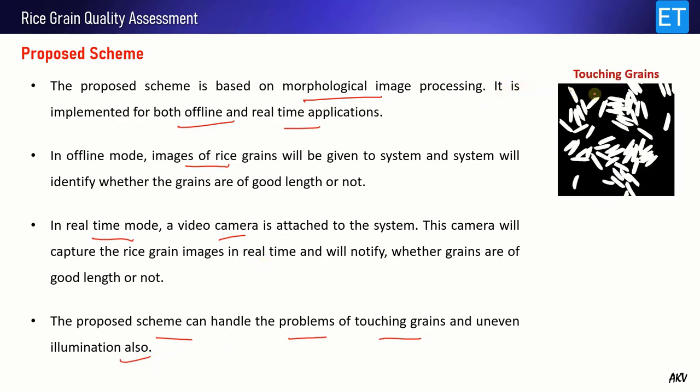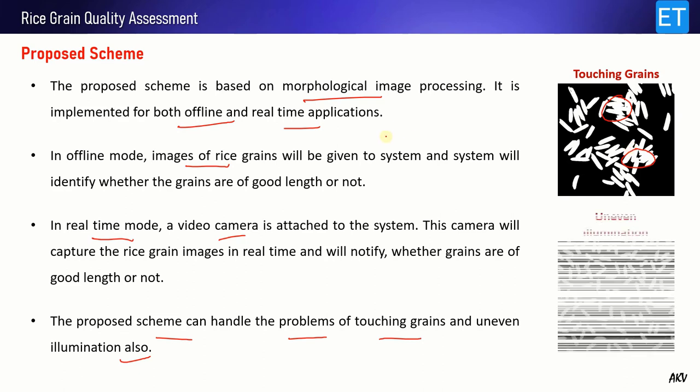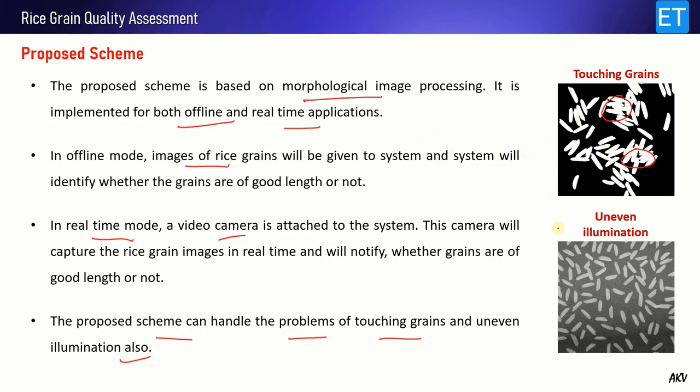Consider this image where we have touching grains. When you put rice grains in the sample, there may be cases where several grains are touching each other. During the binarization process this will create a large white blob, which creates a problem for the algorithm to give the proper outcome. This problem is handled. This is the case of uneven illumination — the lighting is not proper. You can see this image where the upper part is brighter than the lower part which is darker. Such images with uneven illumination are very difficult to binarize, and binarization always creates some undesired artifacts in the output, which again affects the performance of the algorithm. We are dealing with this problem using adaptive binarization.